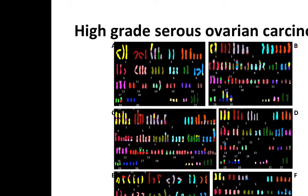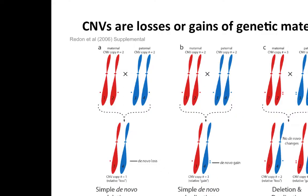This is actually a hallmark of most cancers. Some cancers have fairly diploid genomes, but for a large number of aggressive solid tumors, it's a common phenomenon. Copy number variations are simply losses or gains of genetic material. You can have deletion of a locus, duplication in the chromosome, or even deletion followed by duplication. We'll go over those examples.